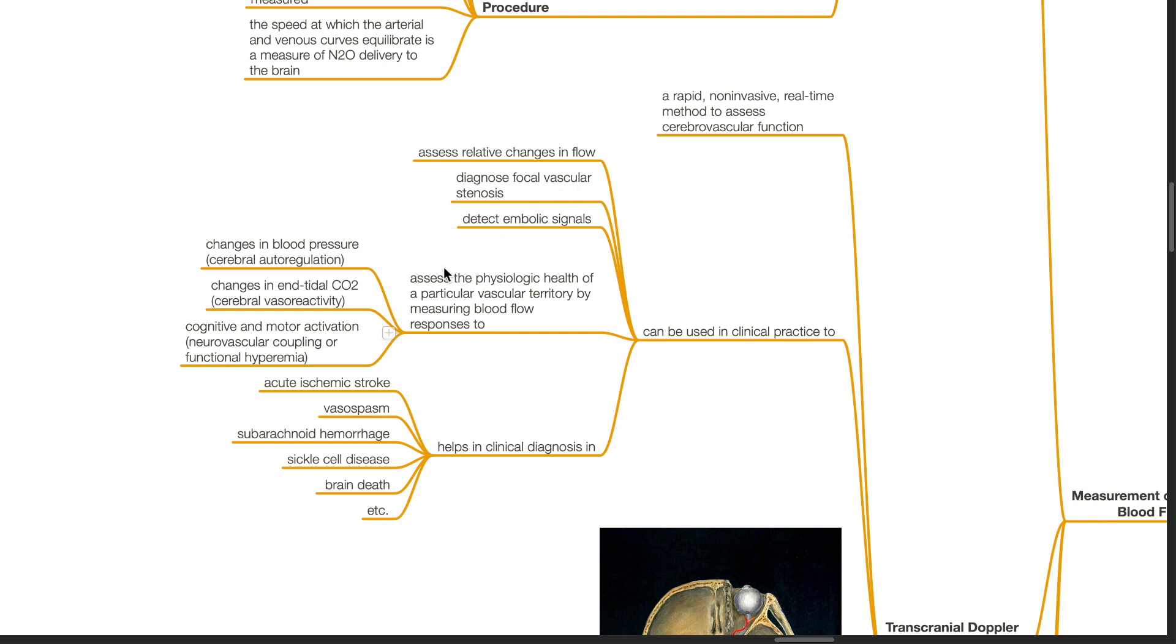Assess the physiological health of a particular vascular territory by measuring blood flow responses to changes in blood pressure, which assesses cerebral autoregulation, changes in ETCO2, which assesses cerebral vessel reactivity, cognitive and motor activation, which assesses neurovascular coupling or functional hyperemia.